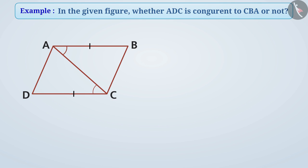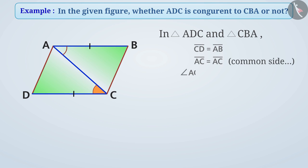We can see in triangle ADC and triangle CBA, CD is equal to AB, AC is equal to AC cause AC is common side. Angle ACD is equal to angle CAB.